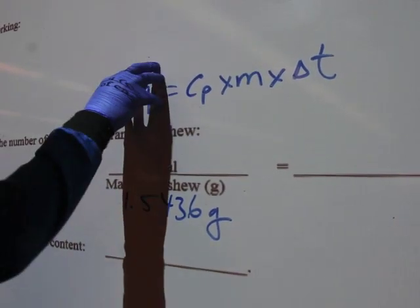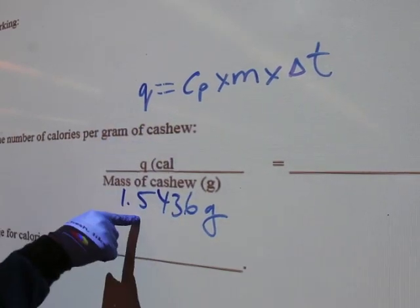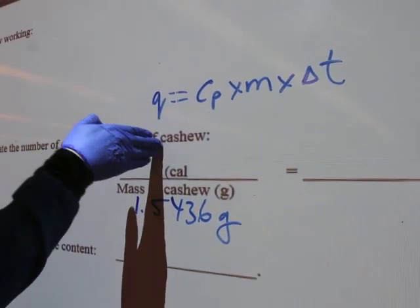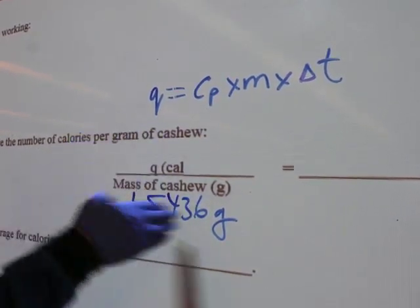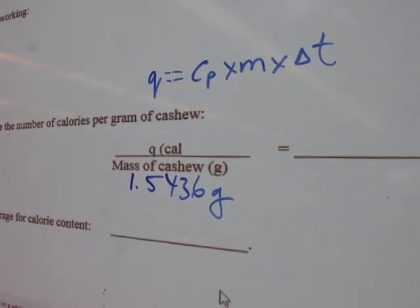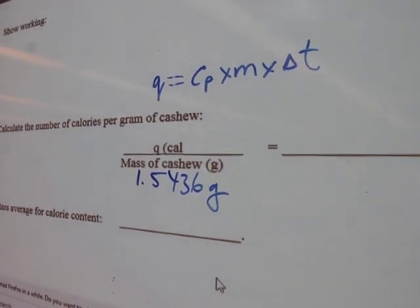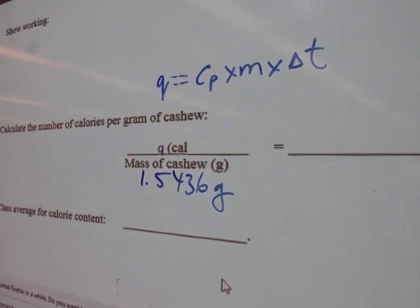You find out how much the Q is and place it here. You know the mass of the cashew. You take the Q divided by this mass, whatever the number is, and it will give you the number of calories per gram of cashew. That would be the end of this experiment.